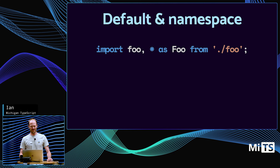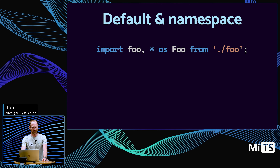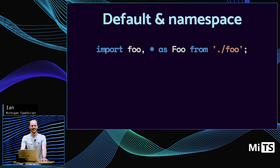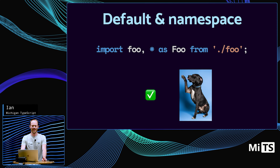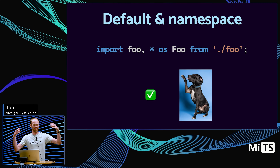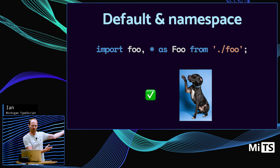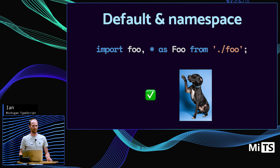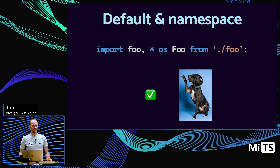A default import combined with a namespace import — is that valid? Yes, that works fine. The namespace import pulls in all the named exports, and you might also have a default that you want to grab as well. So capital-F Foo.default is the same as lowercase foo? Yeah. And you cannot name an export 'default' since it's a reserved word.